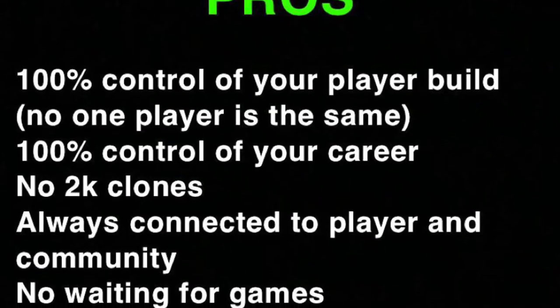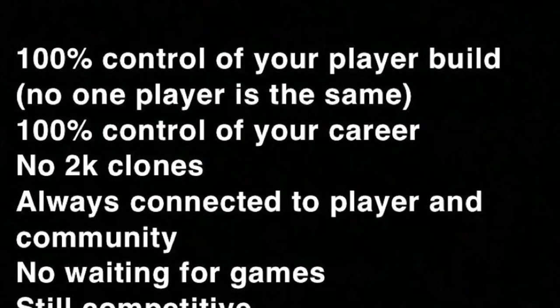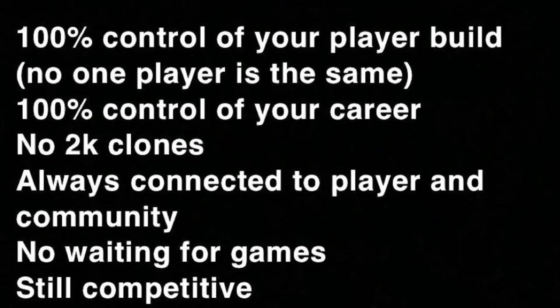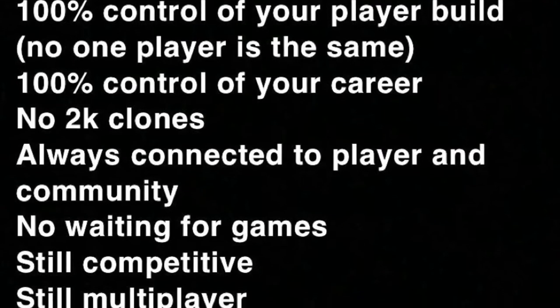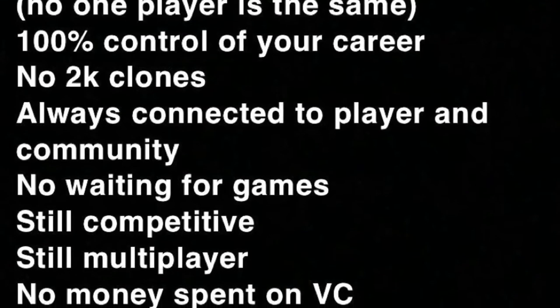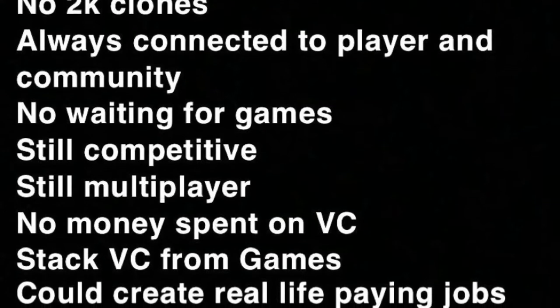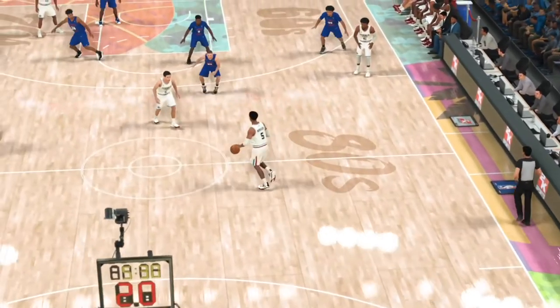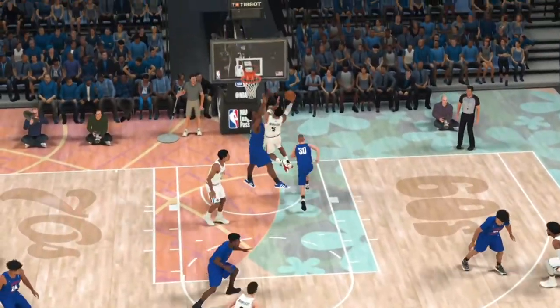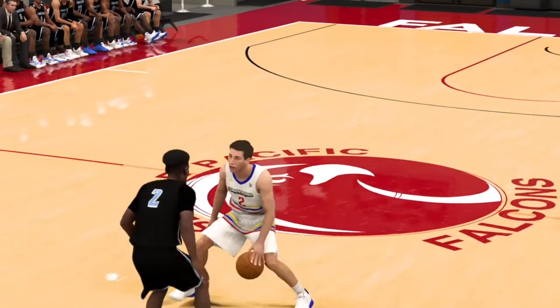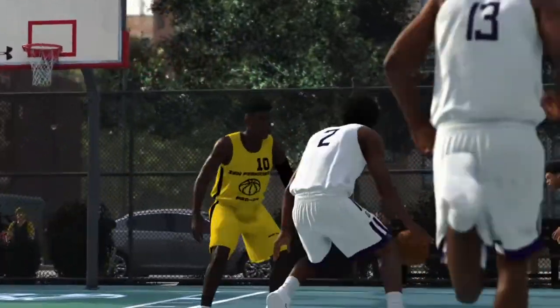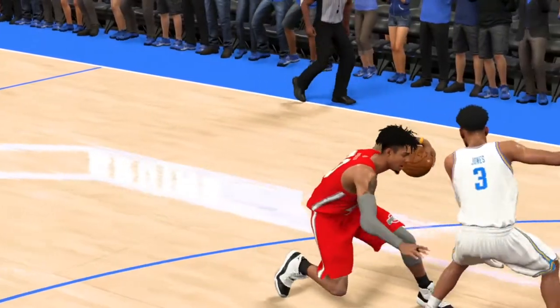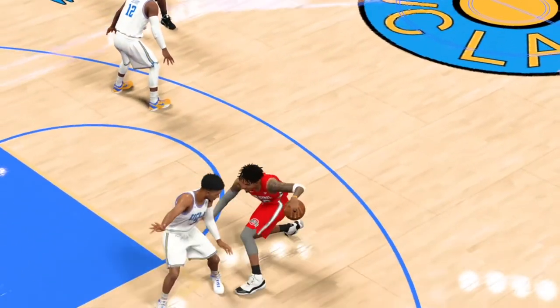Pros: You have 100% control of your player build — no one player is the same. You have 100% control of your career and can make any decisions you want. No 2K clones with the same dribble moves and jump shots. You're always connected to your player in the community. You don't have to wait for games — it's still competitive and multiplayer. No money spent on VC — you're stacking VC from games you play, building up over time. This could also create real-life paying jobs if a famous YouTuber is in your league or it takes off and gets posted on YouTube and Twitch.